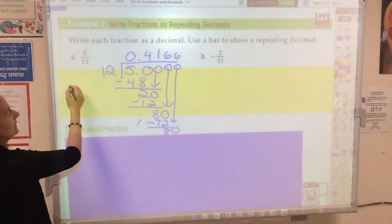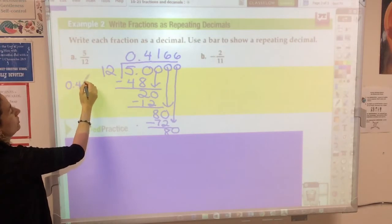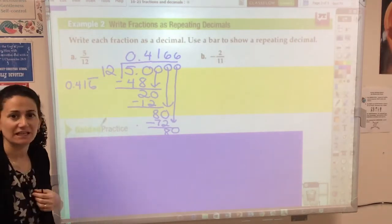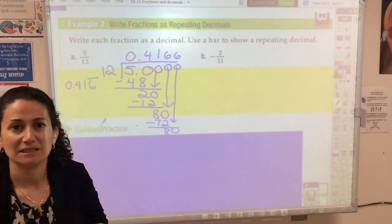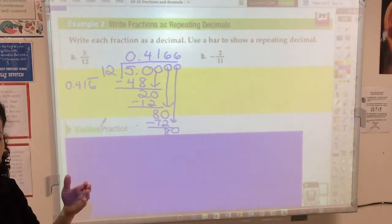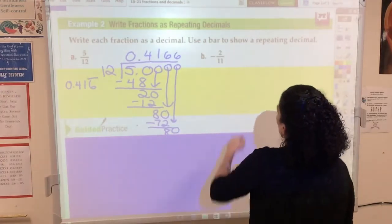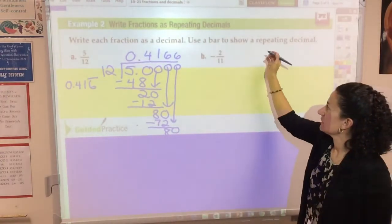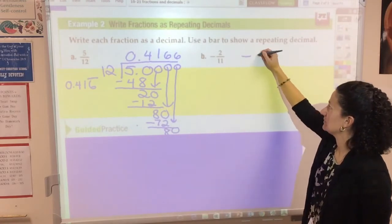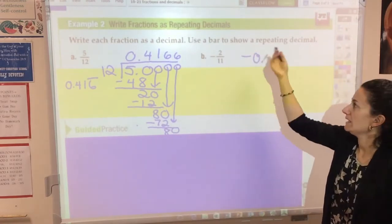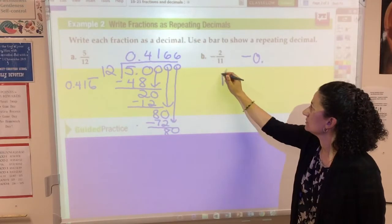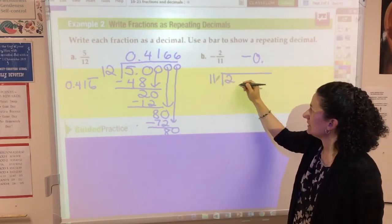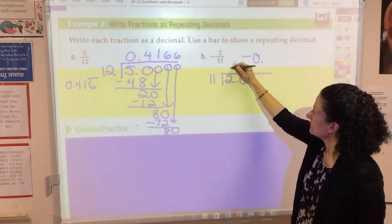So 5/12 is actually 0.416, and I'm going to put a bar over the 6 to show that it repeats. Make sure you use bar notation if a number repeats. Here we have an example of a negative fraction: -2/11. So I know my answer is going to be negative 0 point something. I'm just going to divide as usual: 2 divided by 11.